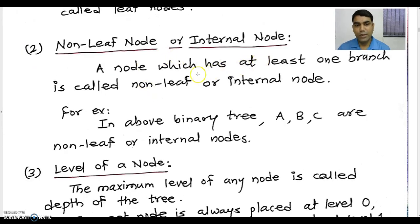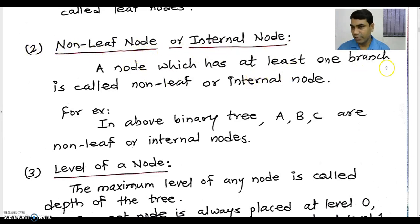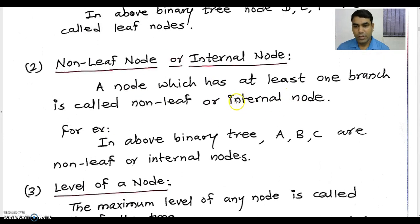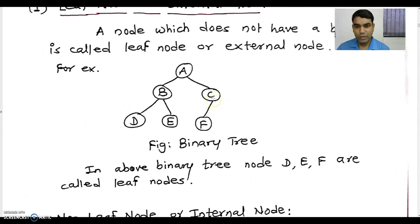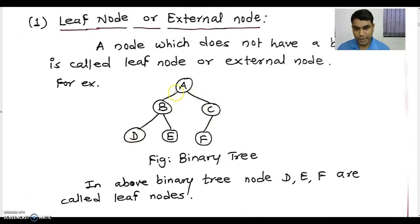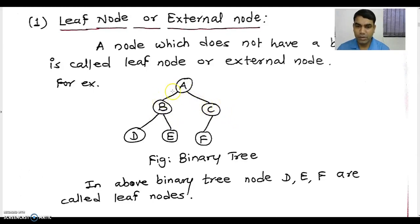The next terminology in binary tree is non-leaf node or internal node. A node which has at least one branch is called a non-leaf node or internal node. In the above diagram, identify which are the non-leaf or internal nodes. In this diagram, node A, node B, and node C are called non-leaf nodes or internal nodes because they have at least one branch.